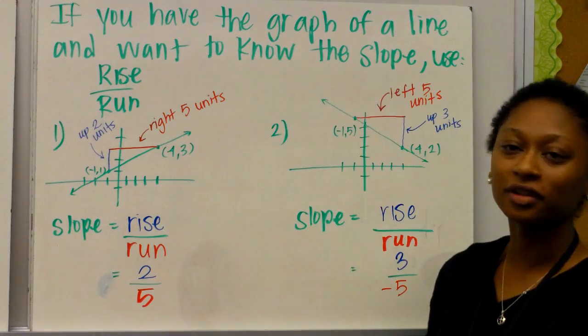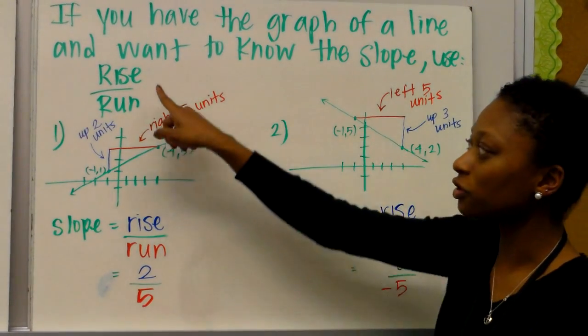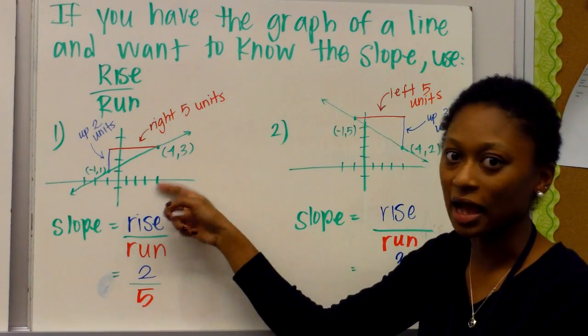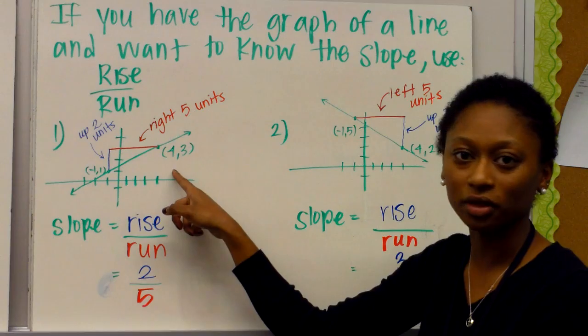If you have the graph of a line and you want to know the slope, use rise over run. So say I have this graph. I have two points, negative 1, 1, and 4, 3.